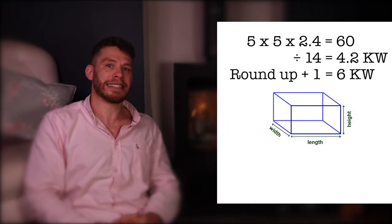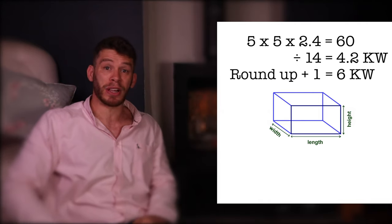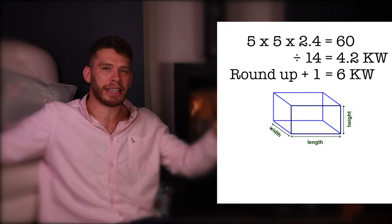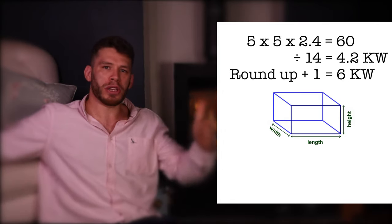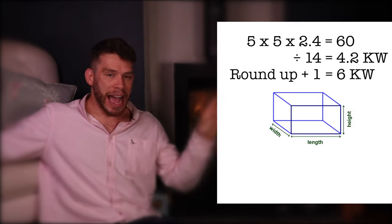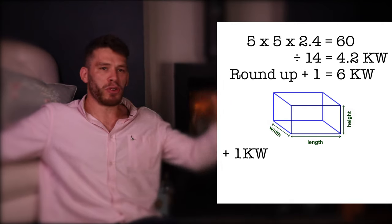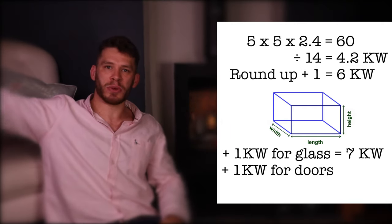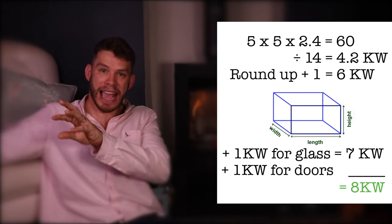You would then add another kilowatt for any big panes of glazing, particularly if it's single glazed, or if you've got a particularly leaky house, or if you think there's a particular reason, like double doors going into another room, why you would need extra heat. And you add a kilowatt for every single one of those reasons. So if I've got a big pane of single glazing, and I've got double doors into another room, I'm going from six kilowatts to eight kilowatts.